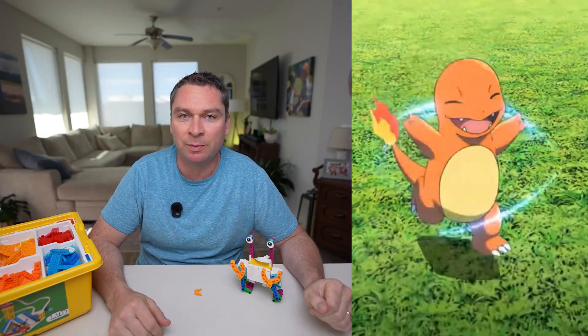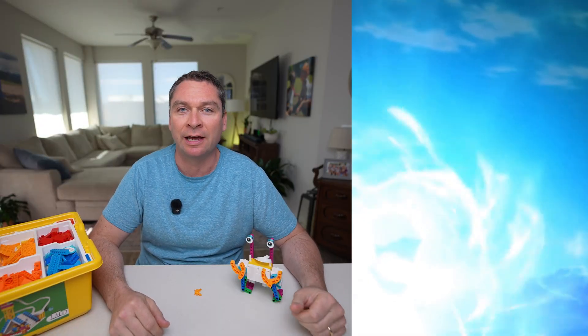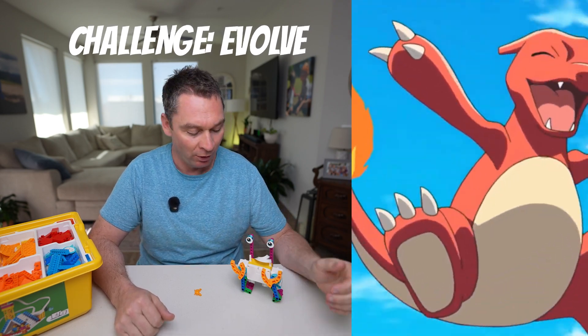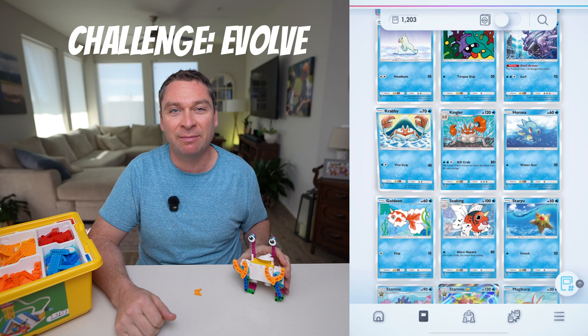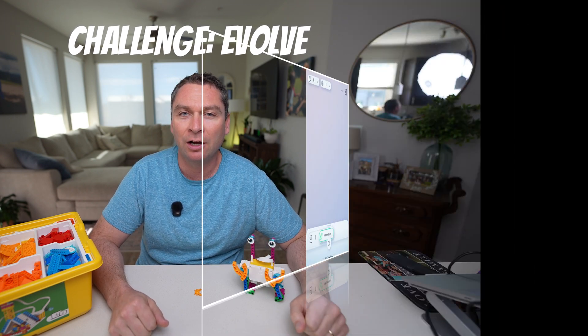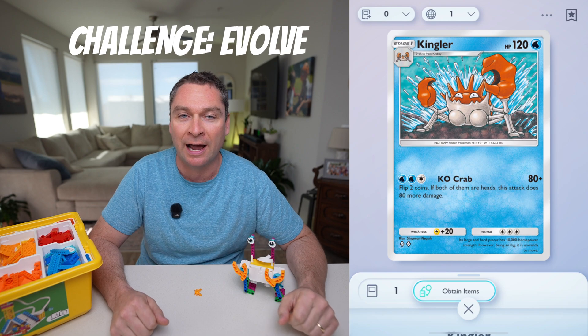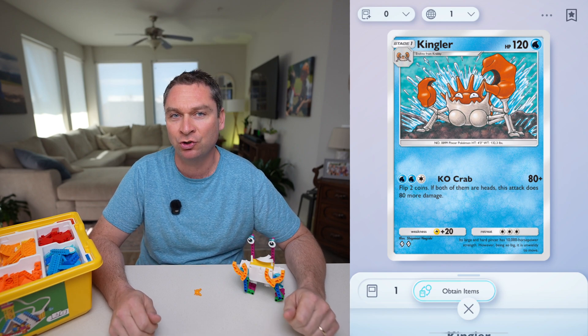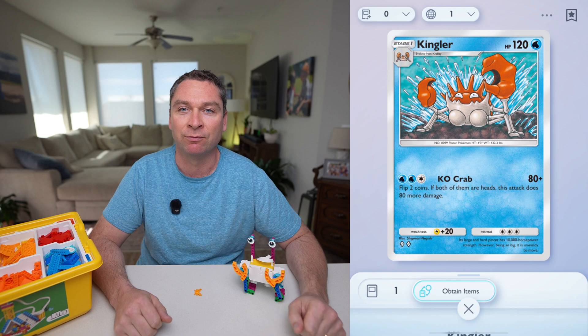Pokemon evolve to become stronger, faster, and even to gain new abilities. Here's your challenge. We've already built Krabby. It's time now to evolve him. Evolve Krabby into Kingler. Let's take a close look at what Kingler has that we're going to need to add or change on Krabby to have the evolved form.